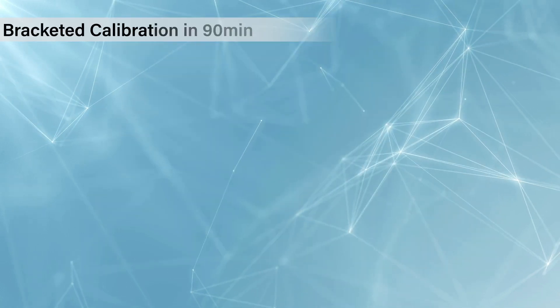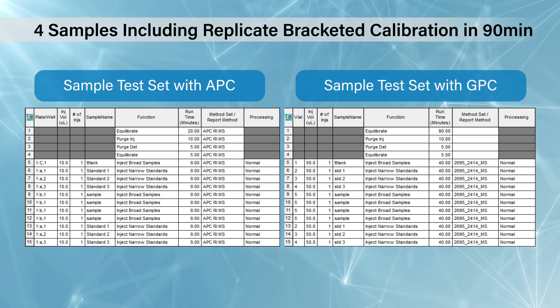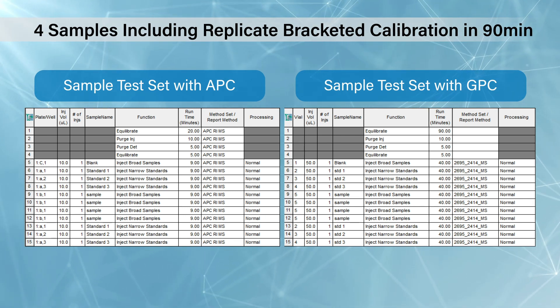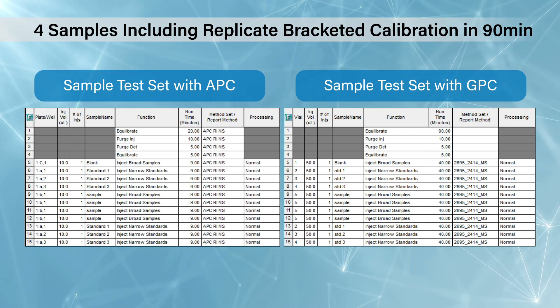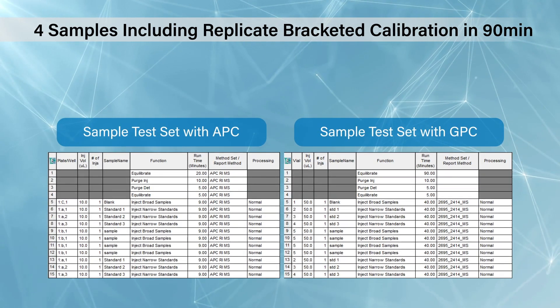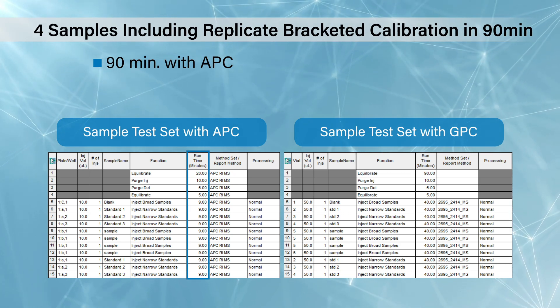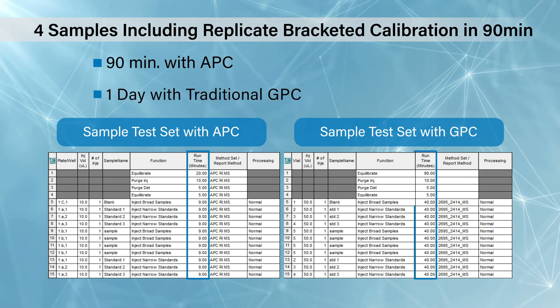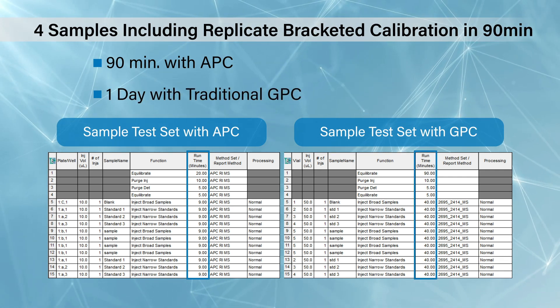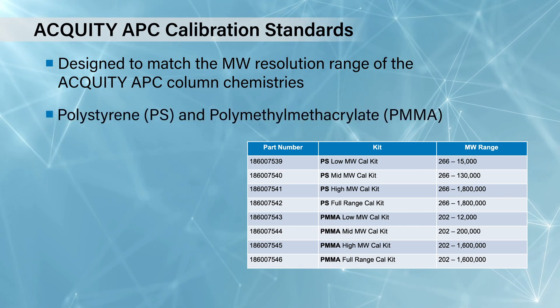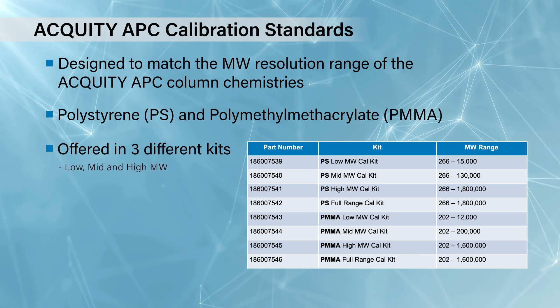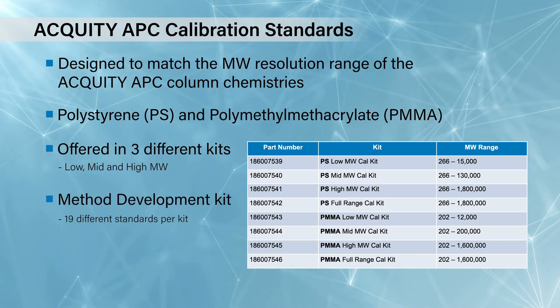We've shown side by side the performance of bracketed calibrations on an APC compared to a traditional GPC column set. For four samples including replicates, with bracketed calibrations to push precision up and to spot any issues with your system earlier, this has taken 90 minutes with the APC. The exact same process on traditional GPC takes a full day. As you scale this, you can see how much more throughput you can achieve, but also importantly how much more confidence you can have in your data. We have matched the molecular weight resolution range of the APC column chemistries to pre-made calibration kits — vials with four standards each, coming in a set of three to give a 12-point calibration.